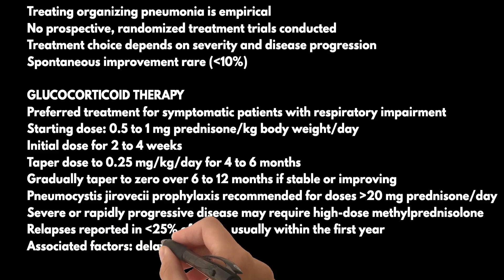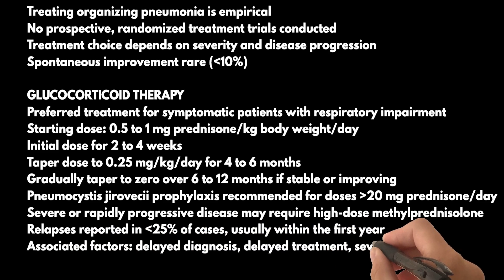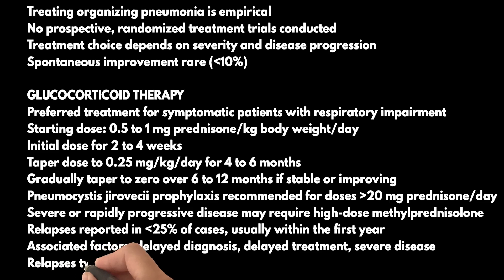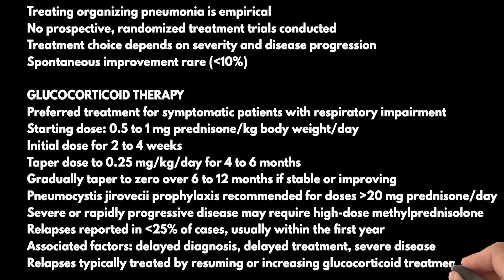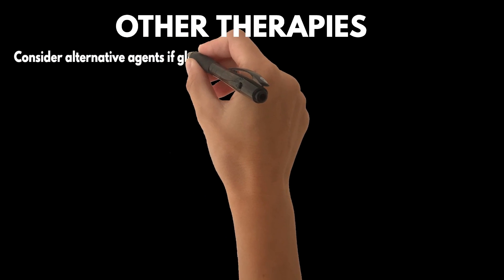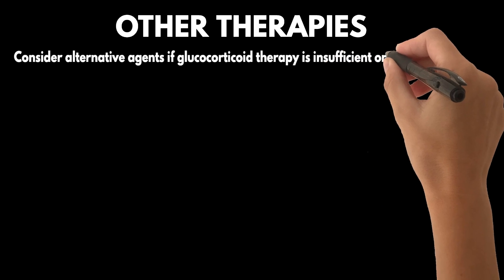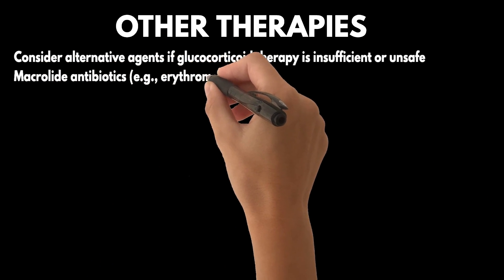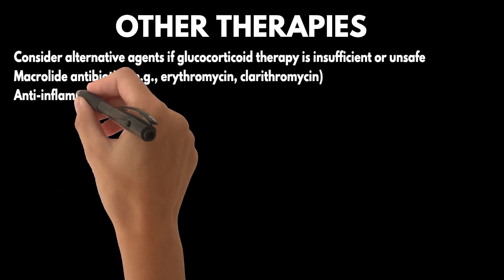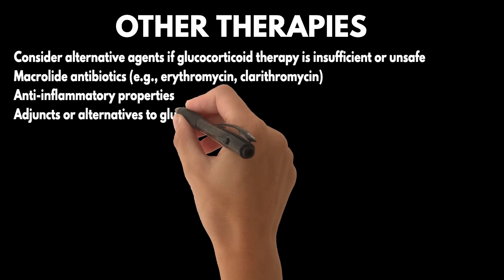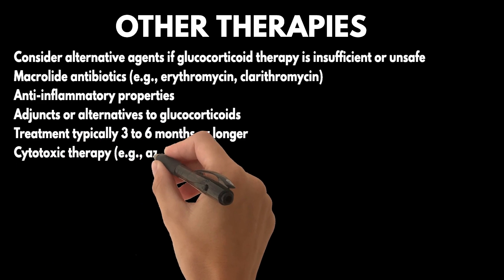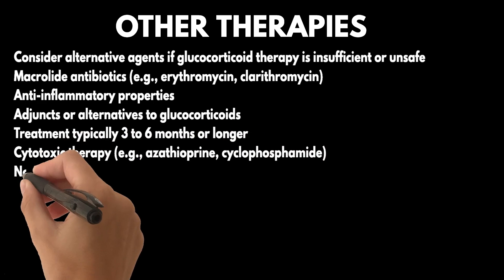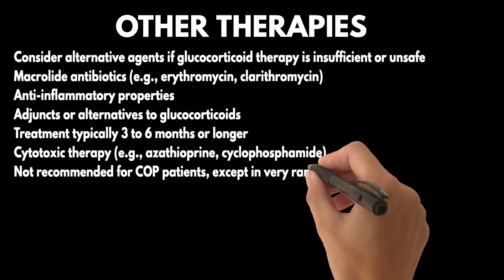Factors associated with relapse include delayed diagnosis, delayed initiation of treatment, and severe disease, among others. Relapses are commonly treated by resuming or increasing glucocorticoid treatment. If the initial glucocorticoid therapy doesn't result in clinical improvement or cannot be tapered to a safe level, alternative agents can be considered. Macrolide antibiotics with anti-inflammatory properties, such as erythromycin or clarithromycin, may be used as adjuncts or alternatives to oral glucocorticoid therapy, usually administered for 3–6 months or longer. Cytotoxic therapy, like azathioprine or cyclophosphamide, is not recommended for COP patients except in very rare cases where other approaches have failed.